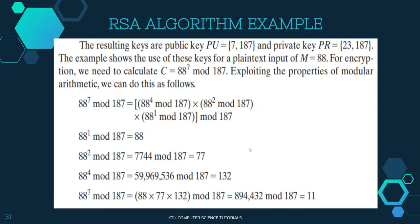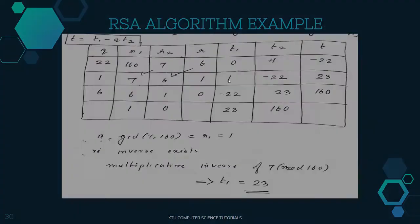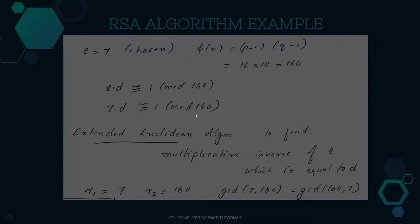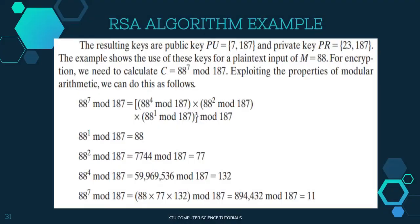So the value of d is equal to 23. The public key is (e, n) which is (7, 187), and the private key is (d, n) which is (23, 187).